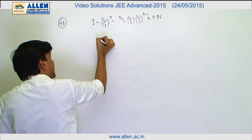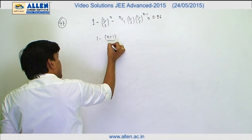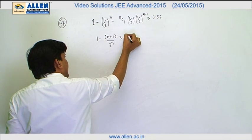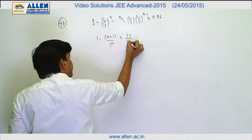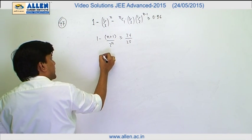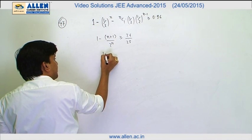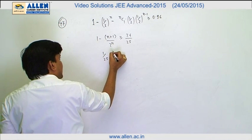Now this is going to be 1 minus n plus 1 upon 2 raised to the power n, and this is 24 upon 25.